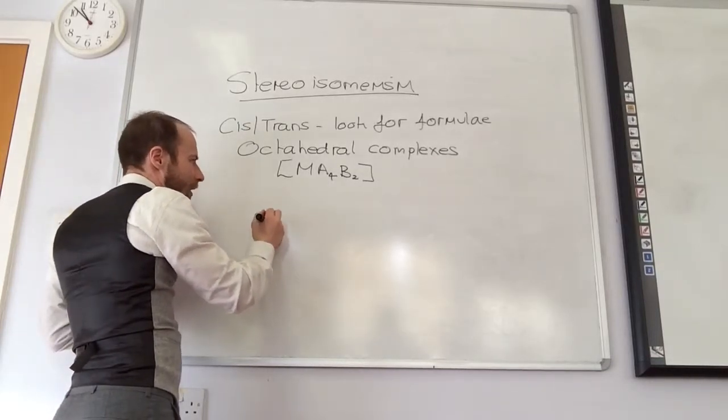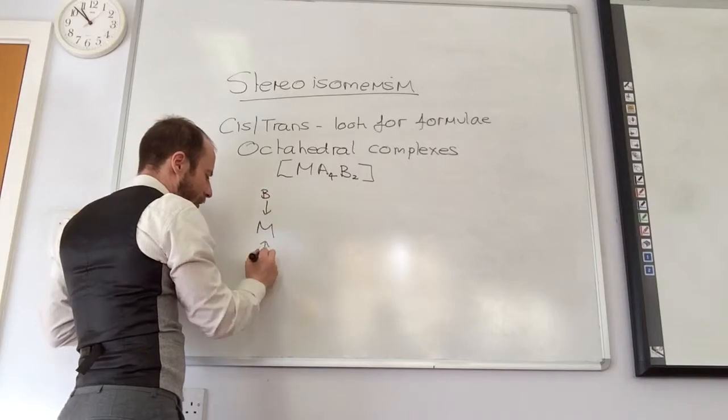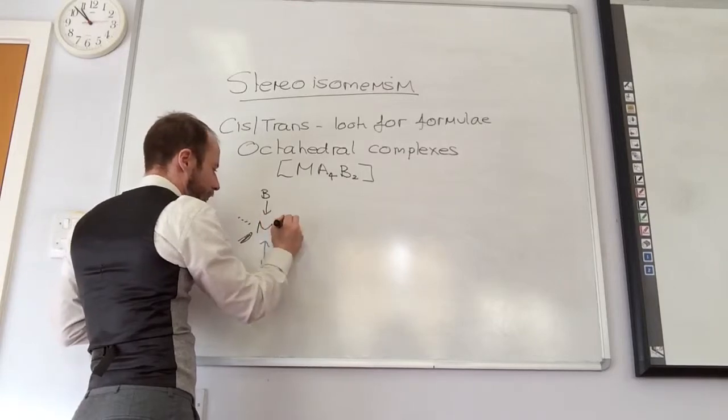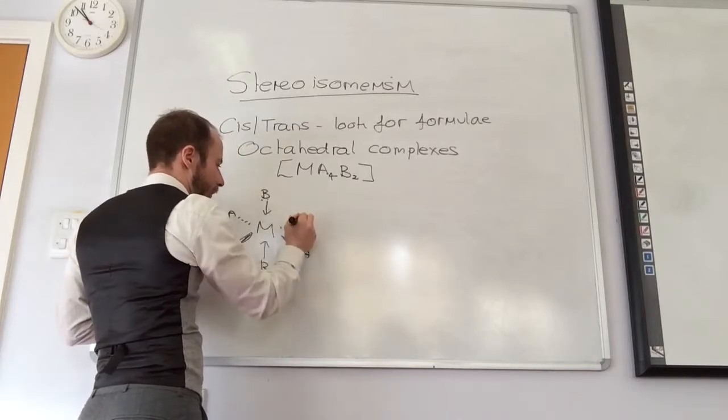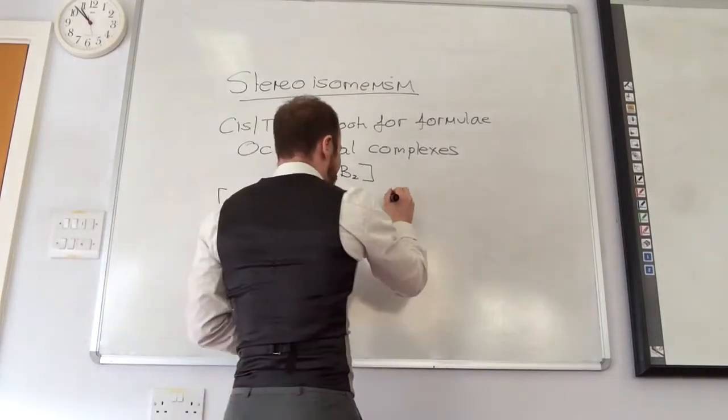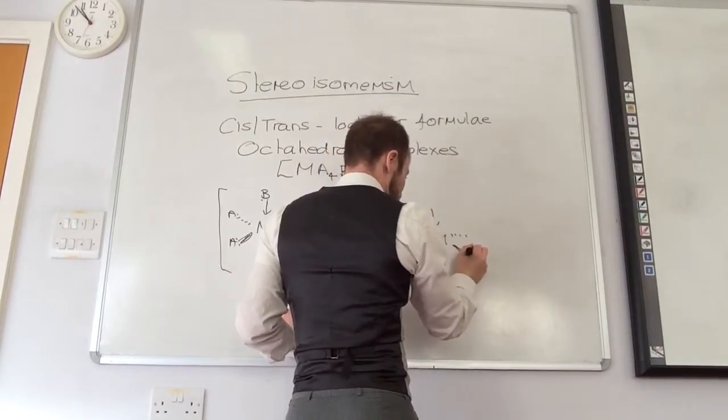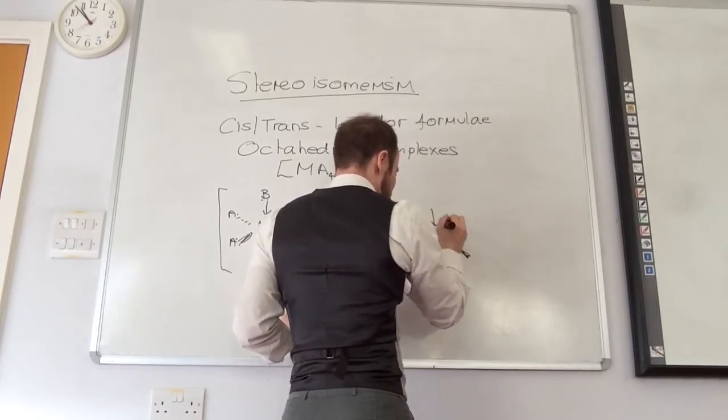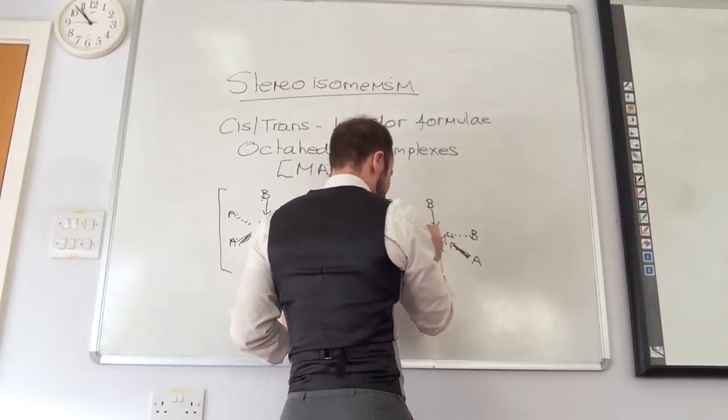So if I just sketch it out, so you would have this arrangement with the B's opposite each other like so, or you could have it with the two B's next to each other. Could you have them one place away from the other and would that be another isomer?